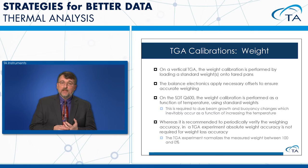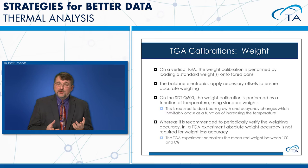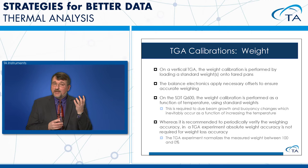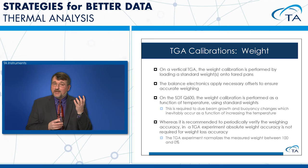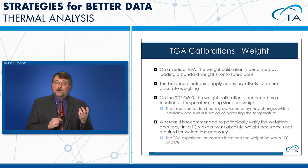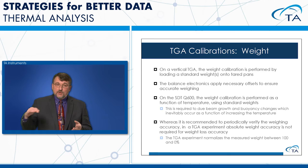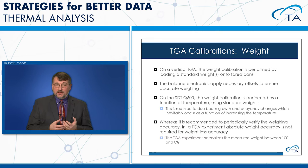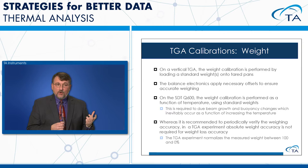Switching to TGA: the first calibration is weight calibration. On a vertical TGA like the Q500, Q50, or Discovery TGA, we load a standard weight onto the pan and measure any offset. On the SDT Q600, a horizontal beam balance, we run an experiment with two weights to compensate for weight, drift, and buoyancy — necessary on both vertical and horizontal instruments due to beam growth and buoyancy changes.